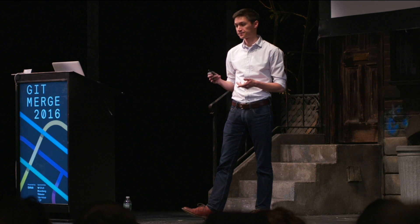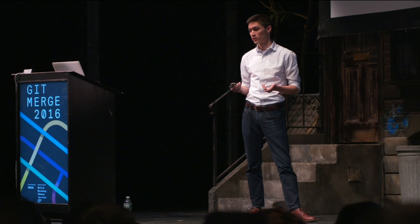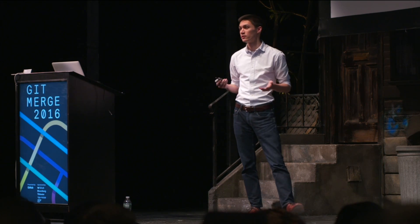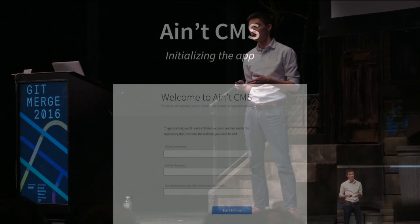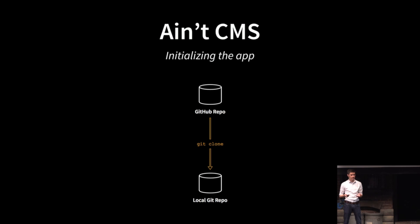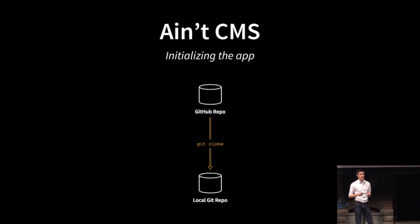So what's it look like? On first run, the user is prompted for their GitHub credentials and the repository URL containing the static site they want to edit. When you click Start Editing, the app automatically clones the origin repo onto the user's local machine and installs any dependencies — like npm install. All this happens behind the scenes, so to the user, all they saw was: I clicked a button.